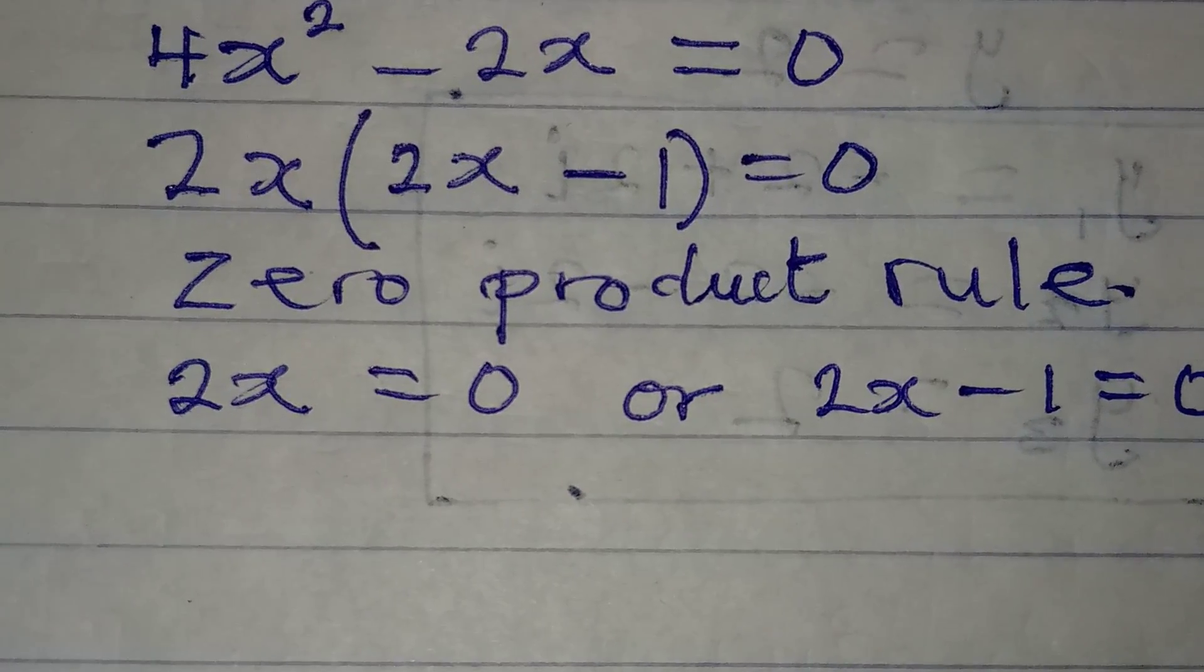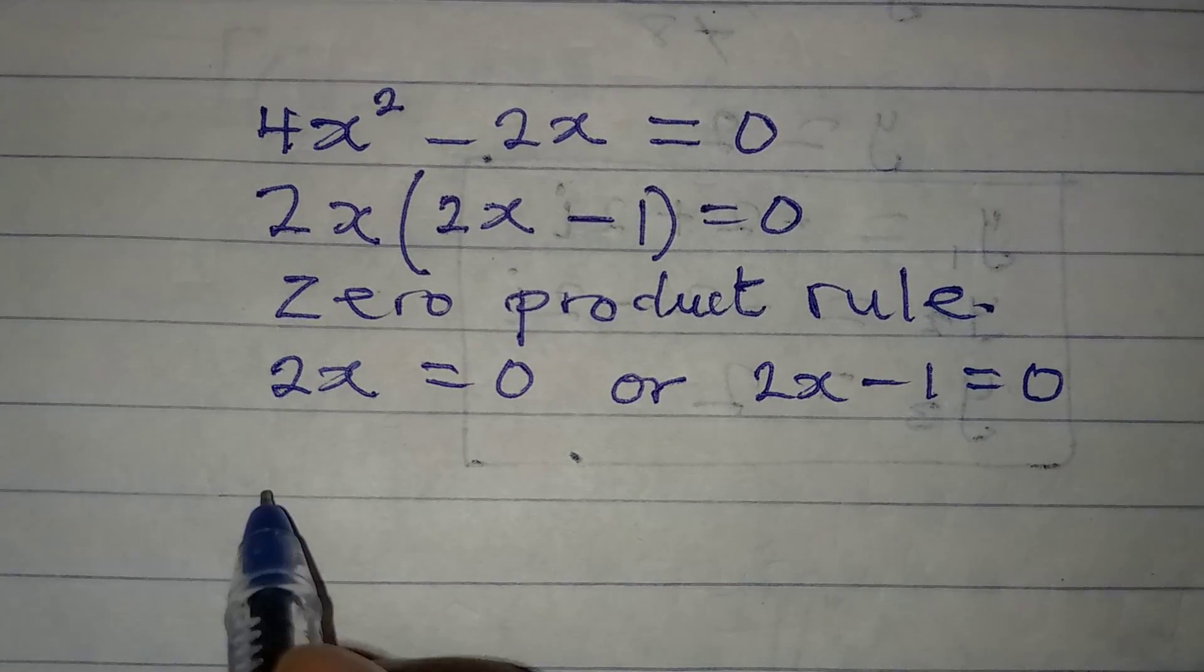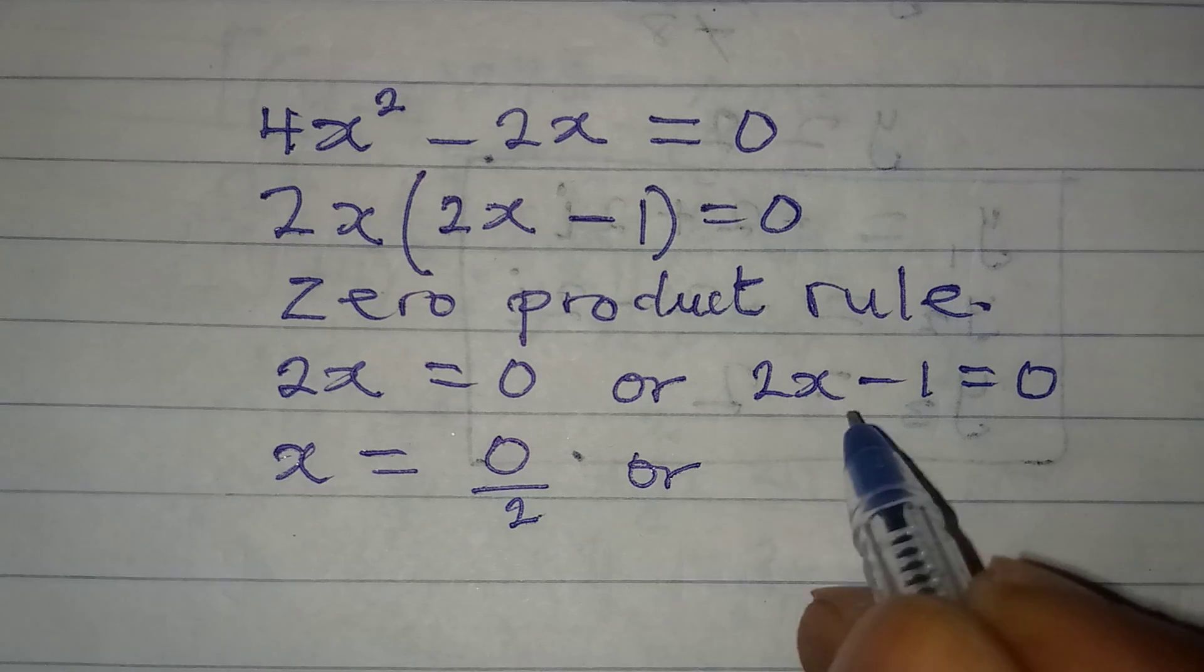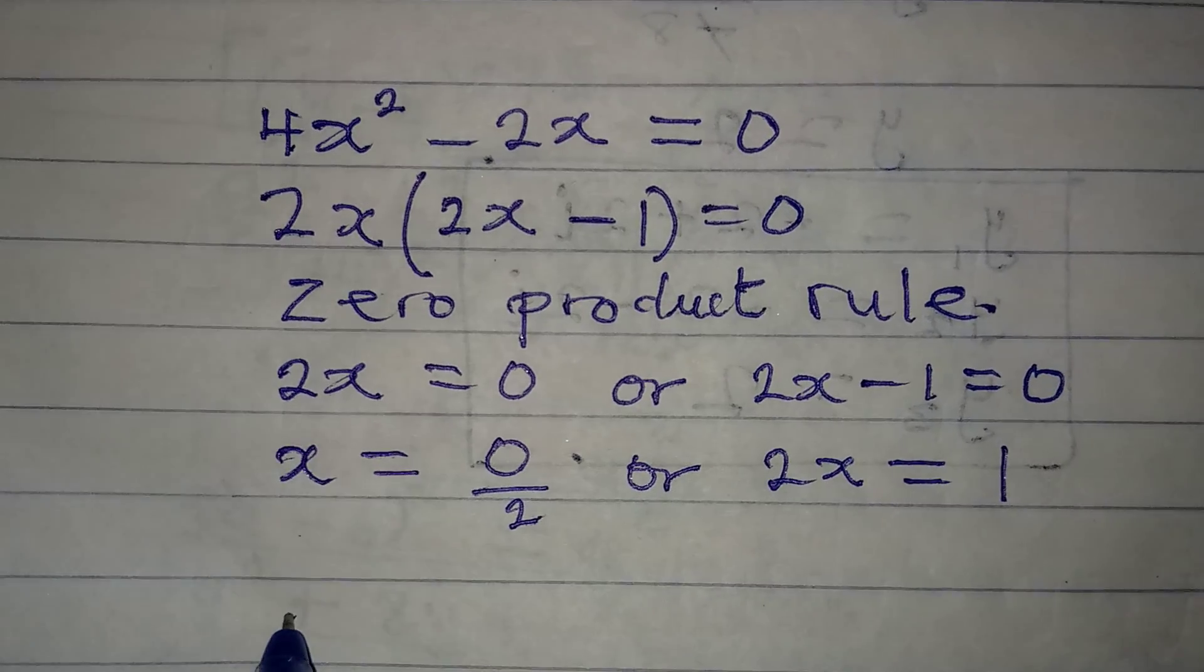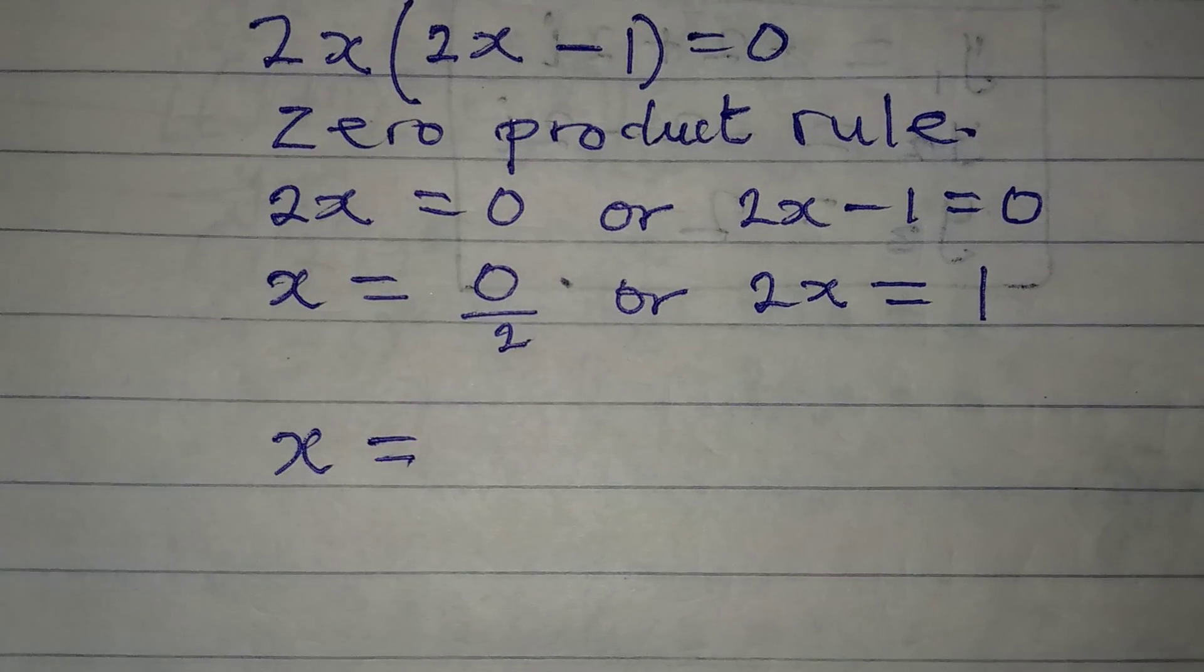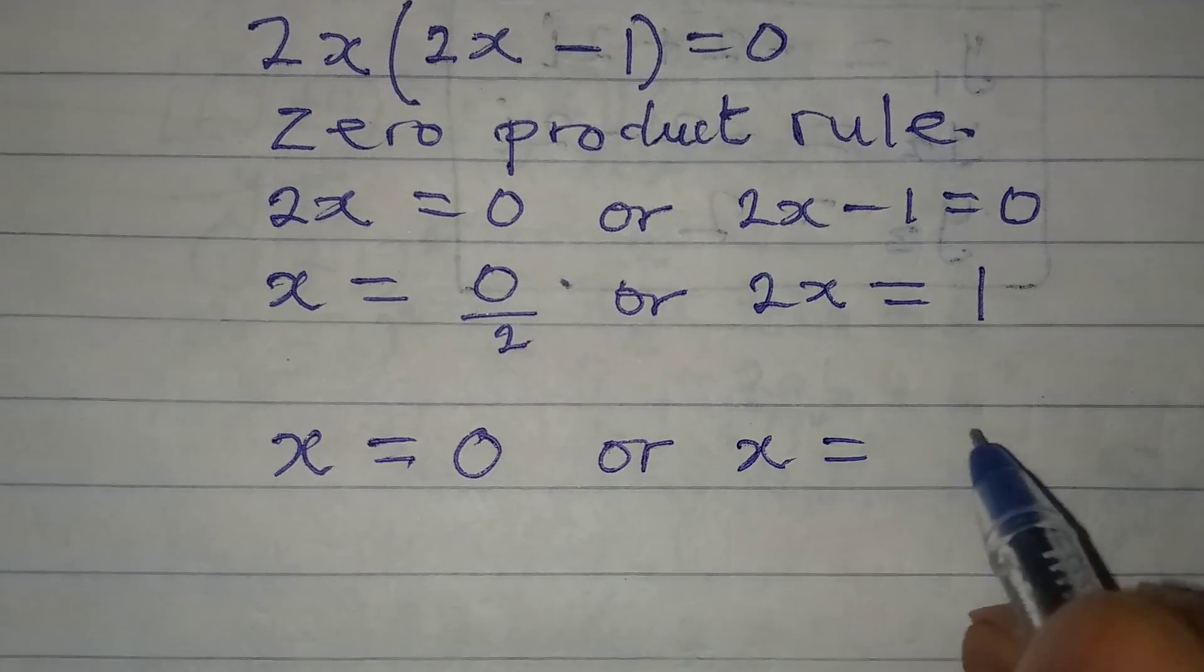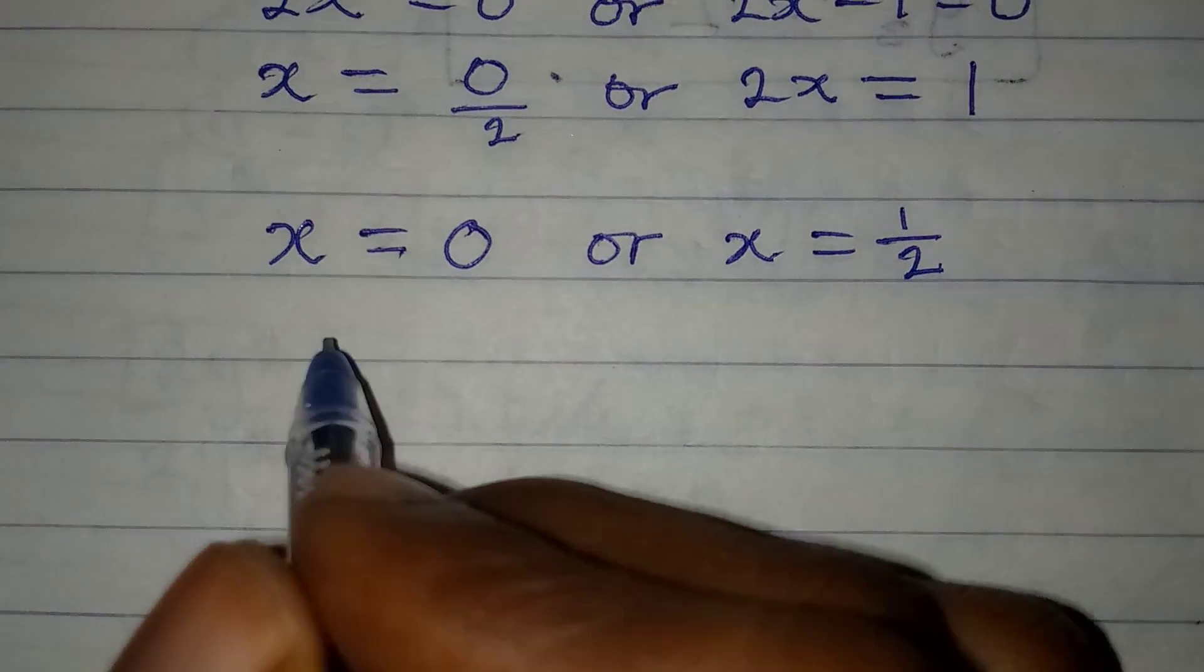From here we can say that x = 0/2, or on this side 2x = 1 and then x = 1/2. Zero over 2 is defined because it will give us zero. Bringing the two solutions together, we have x equal to 0 or 1/2.